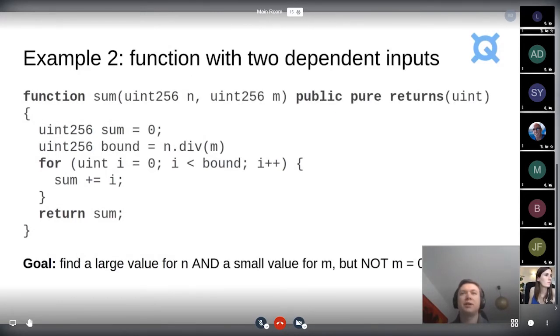Another example is maybe a slightly different function, still pure function that has two parameters, or you can even think about more parameters. But basically you do some computations with these parameters and they don't always influence the result or the gas usage in the same way. So here you can see that we're dividing N by M. So the goal of the reinforcement learning agent is to find a large value for N and a small value for M, but M should not be zero because otherwise it leads to a division by zero. And what's the right way to fix this, we're going to see later.